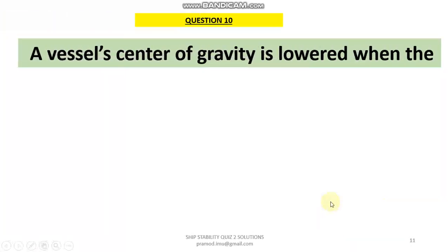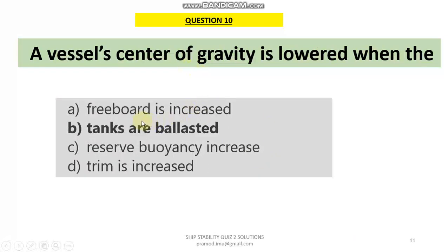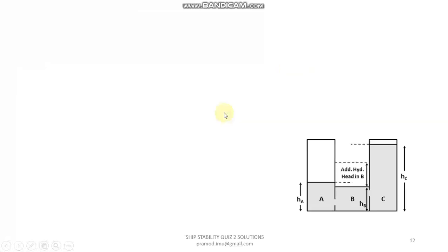Question 10: A vessel's centre of gravity is lowered when you add mass anywhere on a ship — your centre of gravity will have a tendency to go down, especially when the mass is below the current position of the centre of gravity. When your tanks are ballasted, the vessel's centre of gravity will go down. That is the answer for question 10.